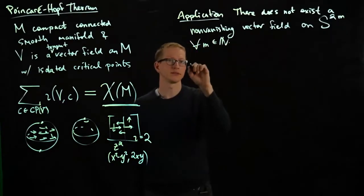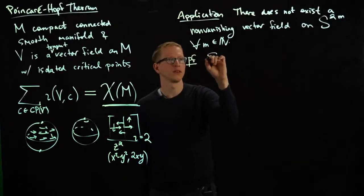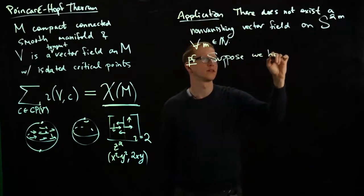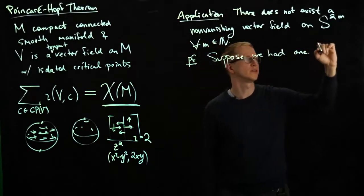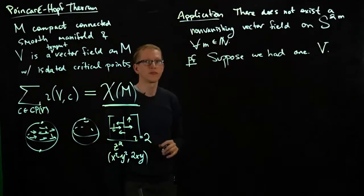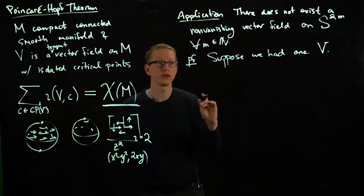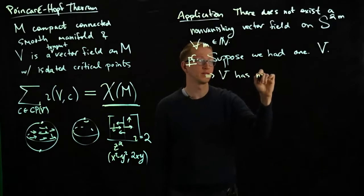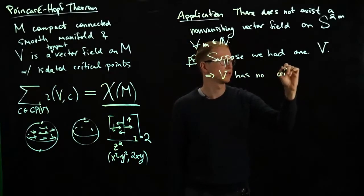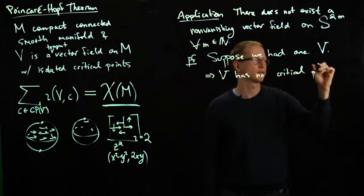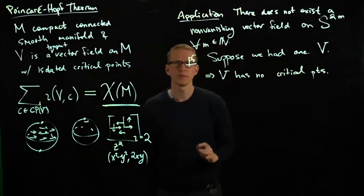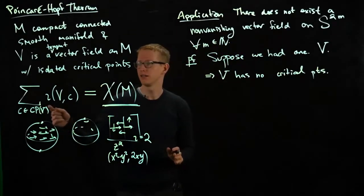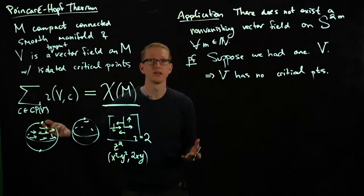Why is that? Suppose we had one, let's call it V. This means that there are no critical points because it doesn't vanish anywhere. And because it has no critical points, that means the left-hand side, this is a sum over the empty set, so that's zero.